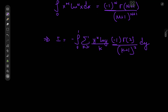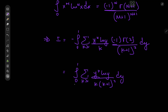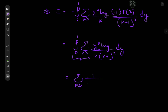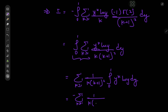The negative 1 cancels with the negative outside, leaving us with the integral from 0 to 1 of the sum over k of y^k times log y divided by k(k+1)² dy. We switch the order of operators again and get the sum over k of 1/[k(k+1)²] times the integral from 0 to 1 of y^k times log y dy. This y-integral is identical to the x-integral, giving us −1/(k+1)². So we now have the sum over k of 1/[k(k+1)⁴].